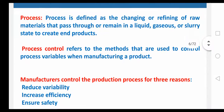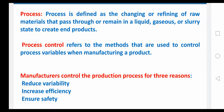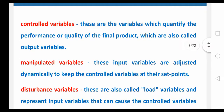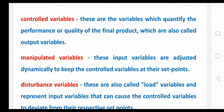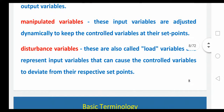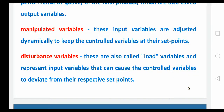Process control — what is process control means — it refers to the methods that are used to control process variables when manufacturing a product. Manufacturers require: reduce the variability, increase efficiency, ensure safety. And control variables — these are the variables which quantify the performance or quality of the final product, which are also called output variables. Manipulated variables — these input variables are adjusted dynamically to keep control variables at their set points. Disturbance variables — also called load variables — represent input variables that can cause the control variables to deviate from their respective set points.